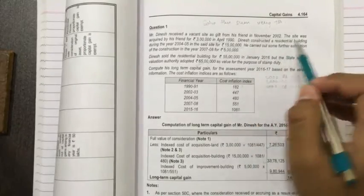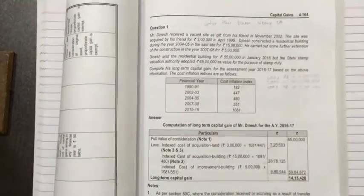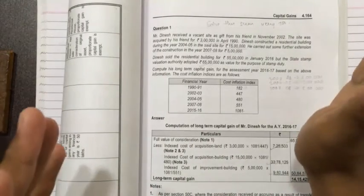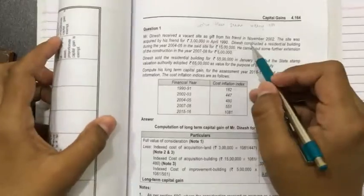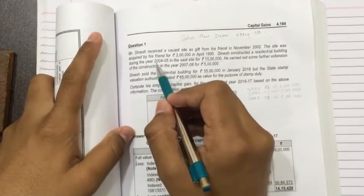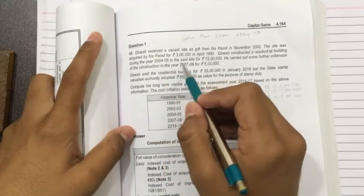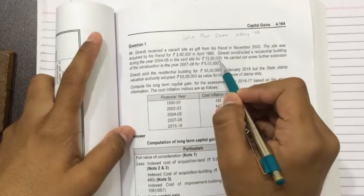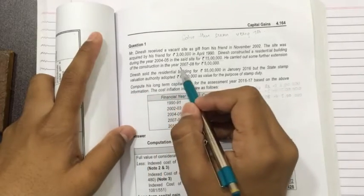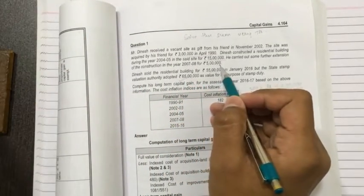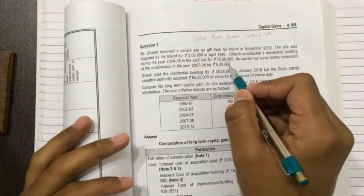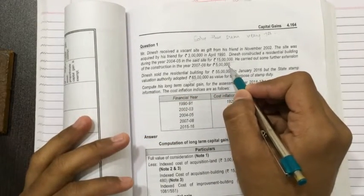Dinesh constructed... I am just teaching you, but that part of income from other sources is not applicable. I am just clearing all your facts so that in real life scenario you don't have any problem. Dinesh constructed a residential building during the year 2004-05 in the site for rupees 15 lakhs. He carried out some further extension of the construction in the year 2007-08 for rupees 5 lakhs. This is cost of acquisition of building. This is cost of improvement in the building.